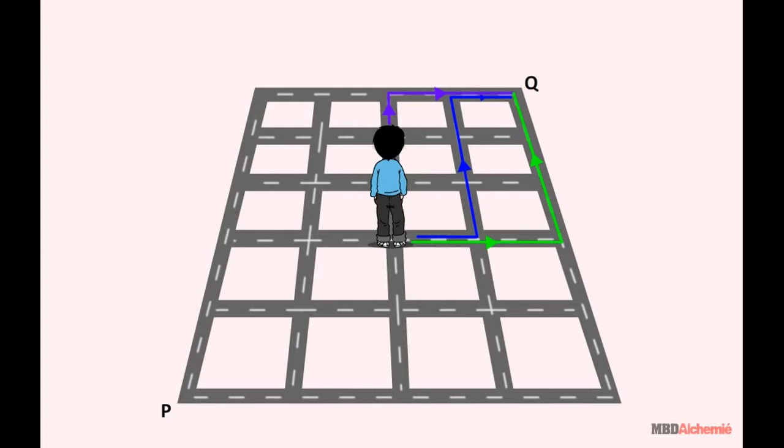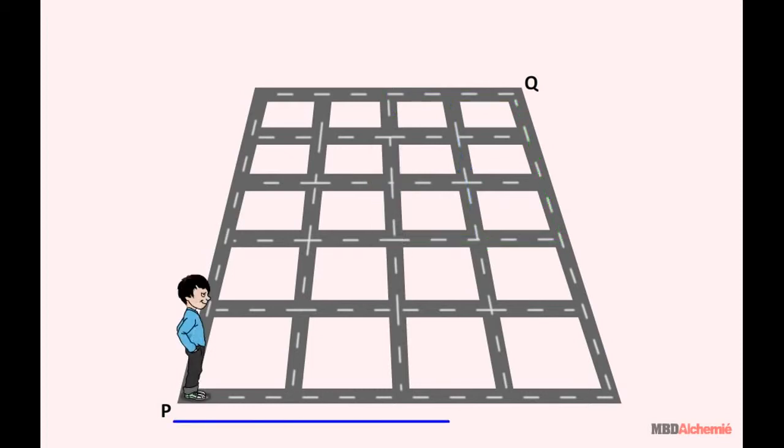We have to calculate the number of ways to go from P to Q. Notice that there can be 4 steps along right and 5 in the upward direction to reach the point Q.